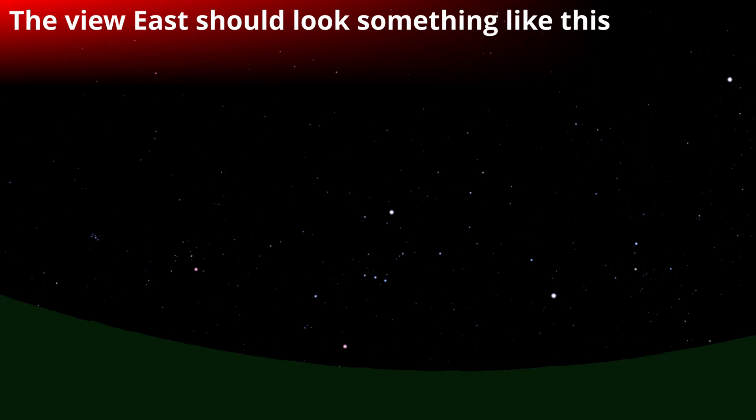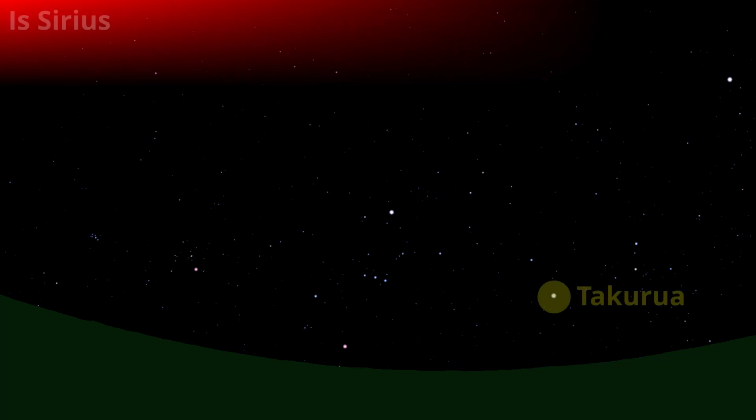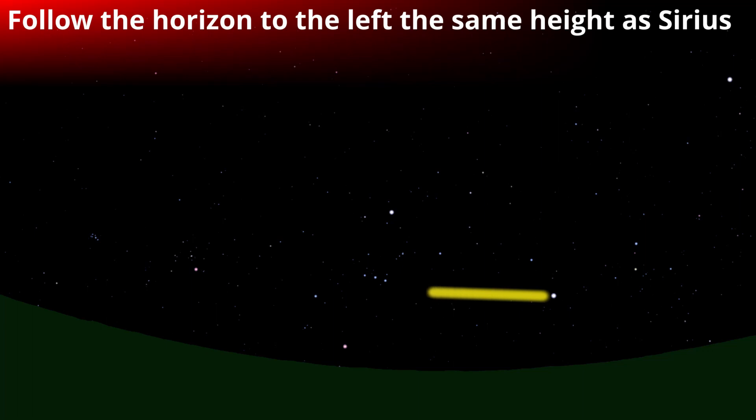And the sky is beautiful. There are a few bright stars in there and the brightest star just to your right near the horizon is called Takurua or Sirius. It's the brightest star in the whole sky so you can't really miss it.